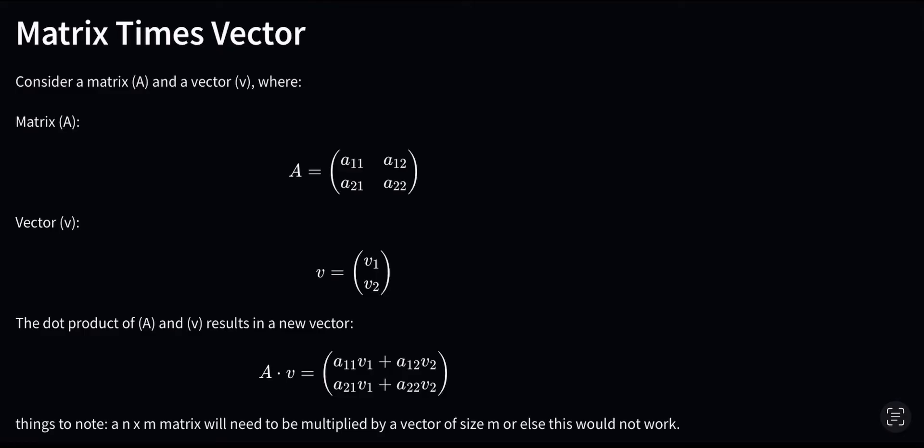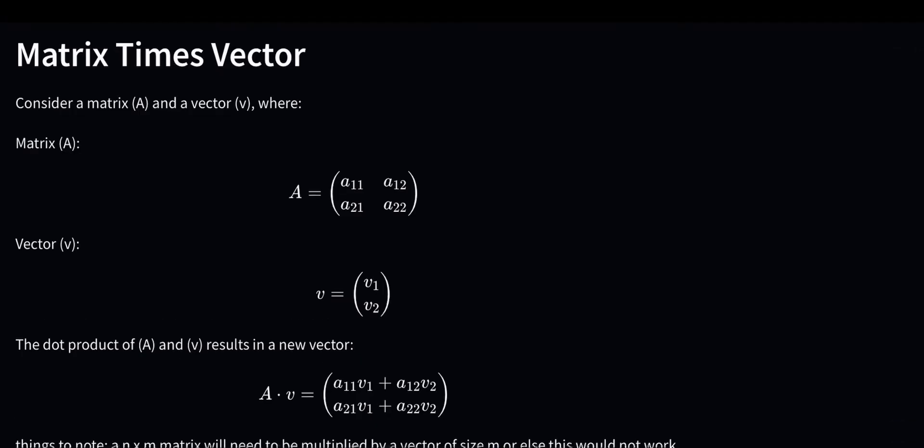So let's say we had a matrix A and a vector V, and we basically wanted to multiply those two things together, which would end up looking something like this.